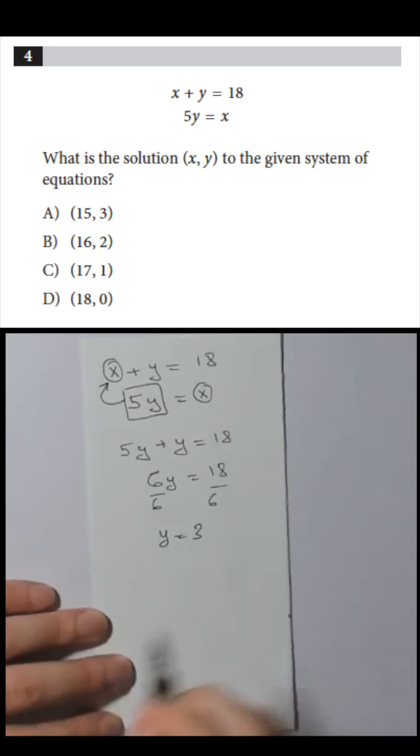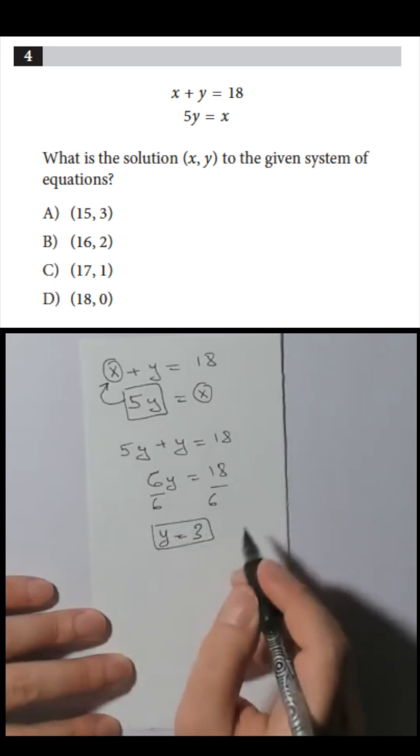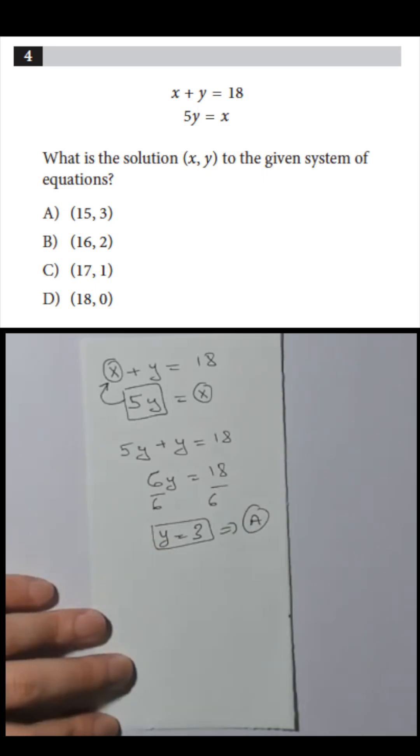Now here's the trick. Among the four options given to you, only option A has its y coordinate equals 3.